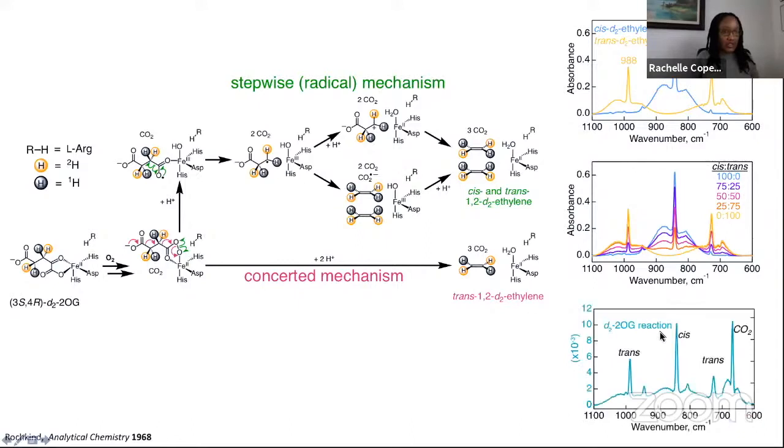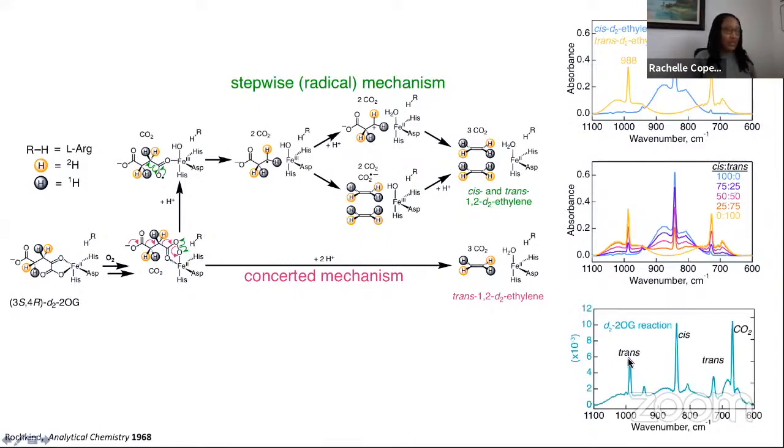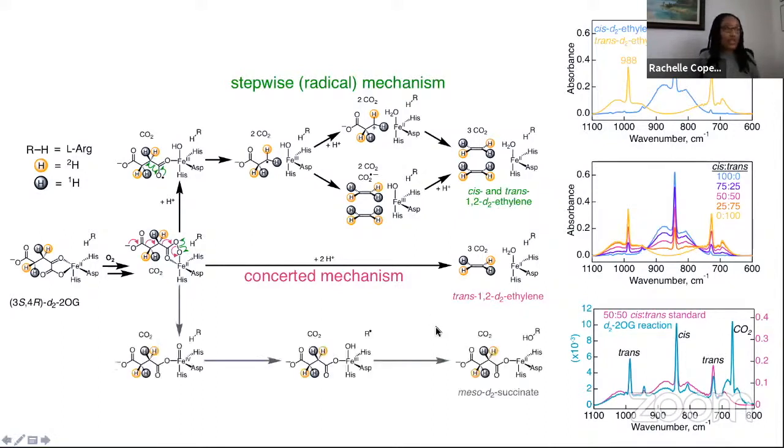What did the results from EFE actually look like? In the spectrum that we obtained, we see peaks at 988, 842, 727, showing clearly that there are both cis and trans. We also see another peak attributable to CO2 and then a small amount, these two little humps here corresponding to D1, so a little bit of washout from the D2-2-OG substrate. When we overlay our reaction spectrum with our standard spectrum, we see that the intensity of the ethylene peaks matches pretty well with the 50-50 mixture. So what this tells us is that starting with 3S4R 2-OG, we end up with a one-to-one mixture of cis and trans ethylene, which is strong evidence for a radical, not a concerted mechanism.